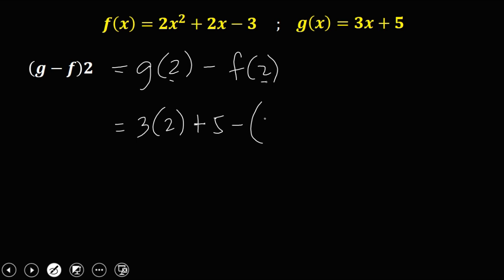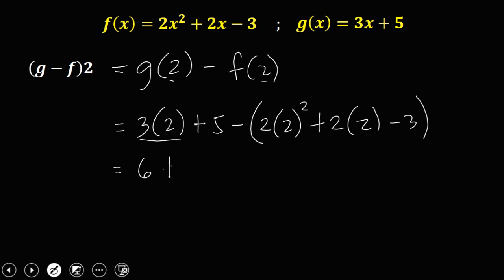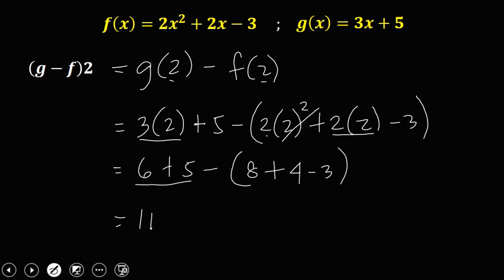Then substitute f of 2 from f of x, but x is 2. So 2 times 2 squared, then 2 times 2 minus 3. Simplify: 3 times 2 is 6 plus 5. So 2 squared is 4 times 2, that's 8. So 6 plus 5 is 11, minus 8 plus 4 is 12, minus 3 is 9. Therefore this equals positive 2, because 11 minus 9 is 2.